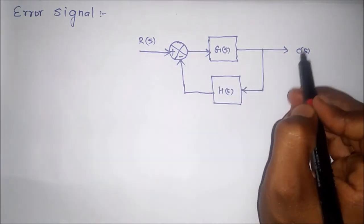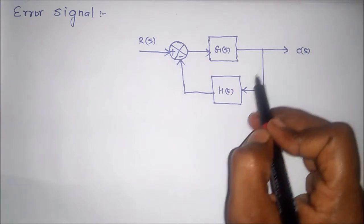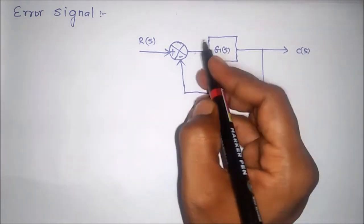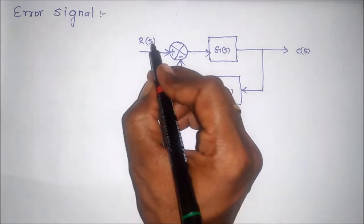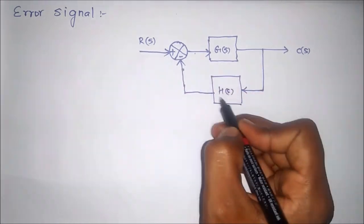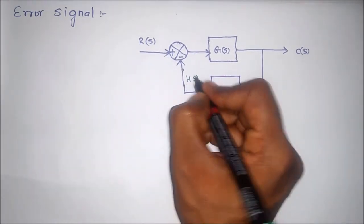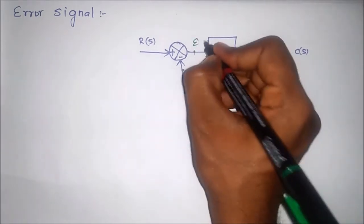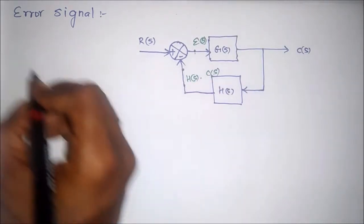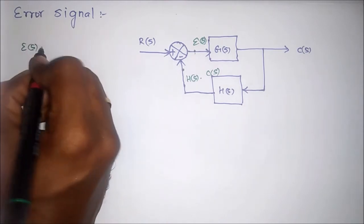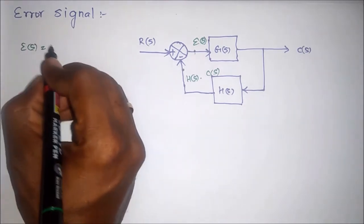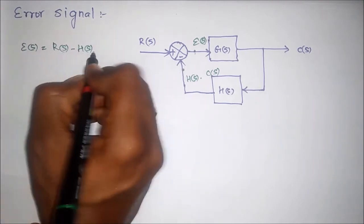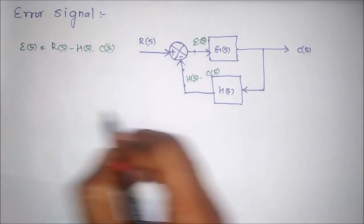If there is a deviation in the output or error, then the output will have some value. Now the error signal equals R(s) minus this value, and this value is nothing but H(s) into C(s). Therefore the error signal E(s) equals R(s) minus H(s) into C(s).